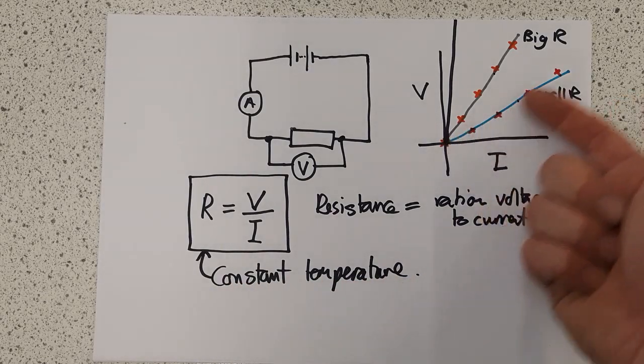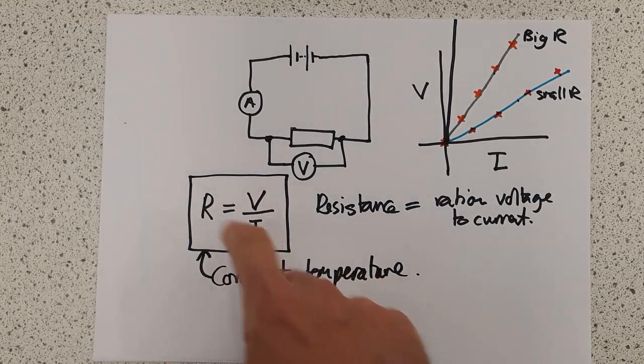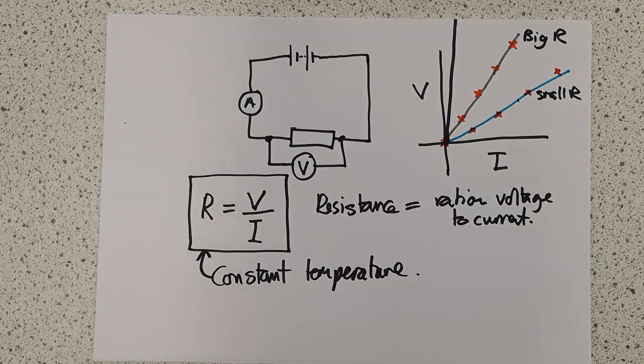And those conductors which follow Ohm's law, which give us a straight line graph, are called Ohmic conductors. So you'll be asked to do calculations involving R, V and I, no doubt, in the higher paper for P5.